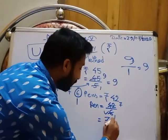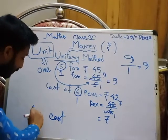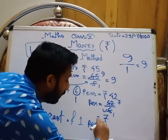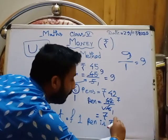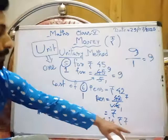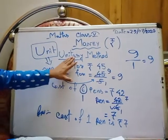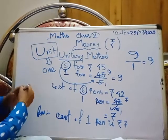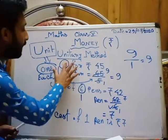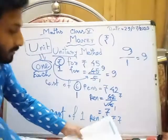So the answer is: the cost of 1 pen is ₹7. We use the rupee symbol, then write the number. This is the unitary method — 'unitary' comes from 'unit,' meaning one or each.